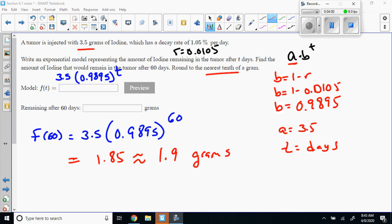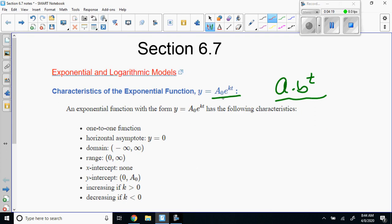To the nearest tenth, that is approximately 1.9 grams of iodine. That's the original exponential equation that we normally look at. We will go to this other form in a couple more problems.